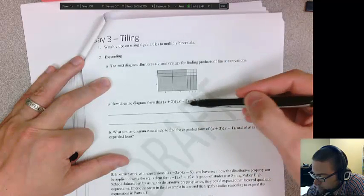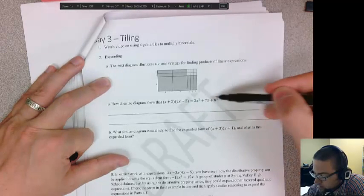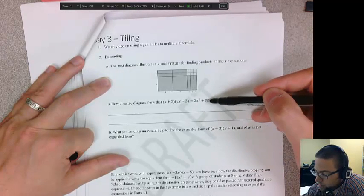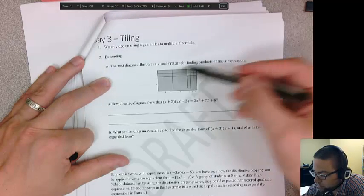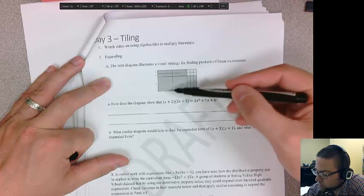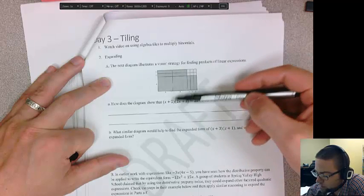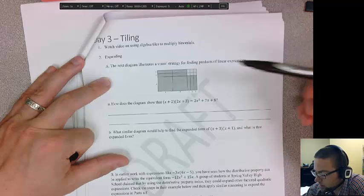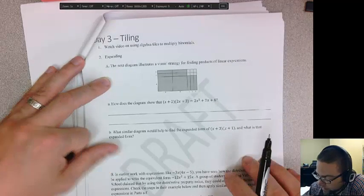So how does this diagram show that x plus 2 times 2x plus 3 is equal to 2x squared plus 7x plus 6? Look at that and describe where is this 2x plus 3 coming from in this diagram, where is this x plus 2 coming from in this diagram, and then how is it equivalent to that expression.